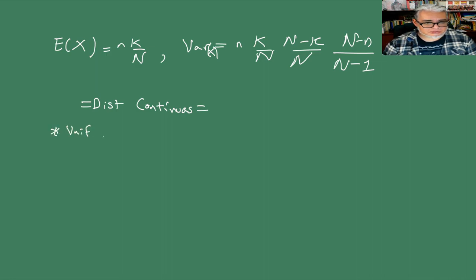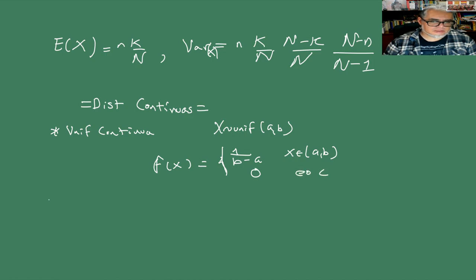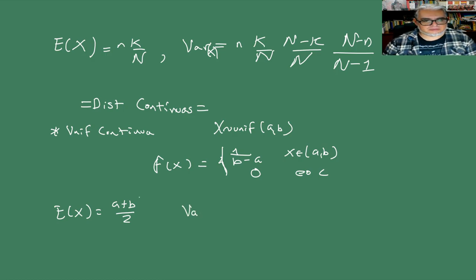La uniforme continua tiene densidad de la forma 1 sobre b menos a, si X está en el intervalo (a, b), o 0 en cualquier otro caso. La esperanza es a más b sobre 2, que es el valor medio de estos dos, y la varianza de X es (b menos a)² sobre 12.